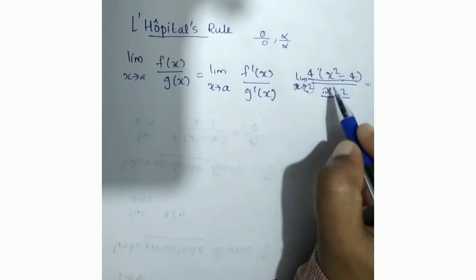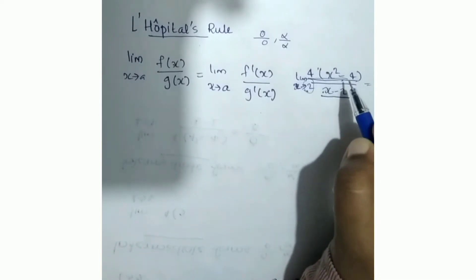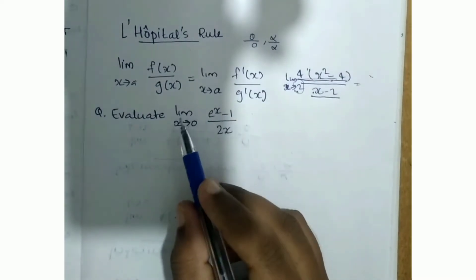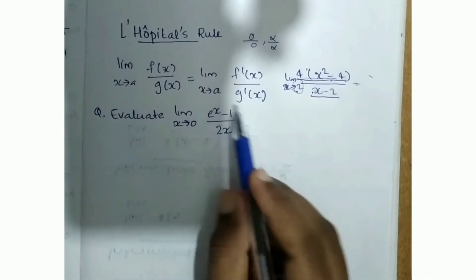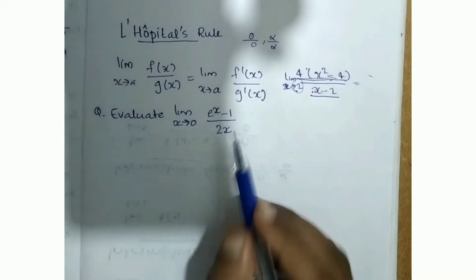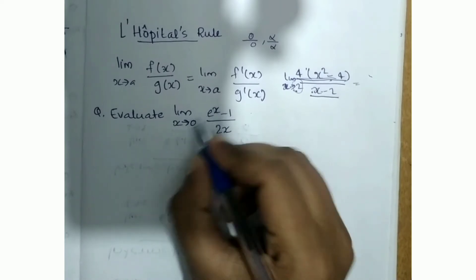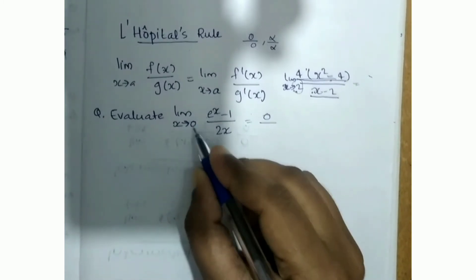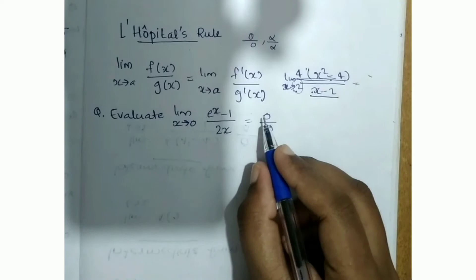Now, the numerator and denominator are two different differentiable functions. The question is: evaluate limit x tends to 0 of (e^x - 1) divided by 2x. We substitute x = 0: e^0 is 1, so 1 - 1 = 0 in the numerator. In the denominator, 2×0 = 0. So we get 0 by 0 — it is an indeterminate form.